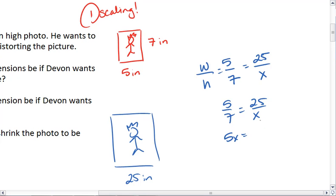We can cross multiply, giving us 5x equals 7 times 25, which should be 175. Then 175 divided by 5 gives us x equals 35. Again we see 35 inches.